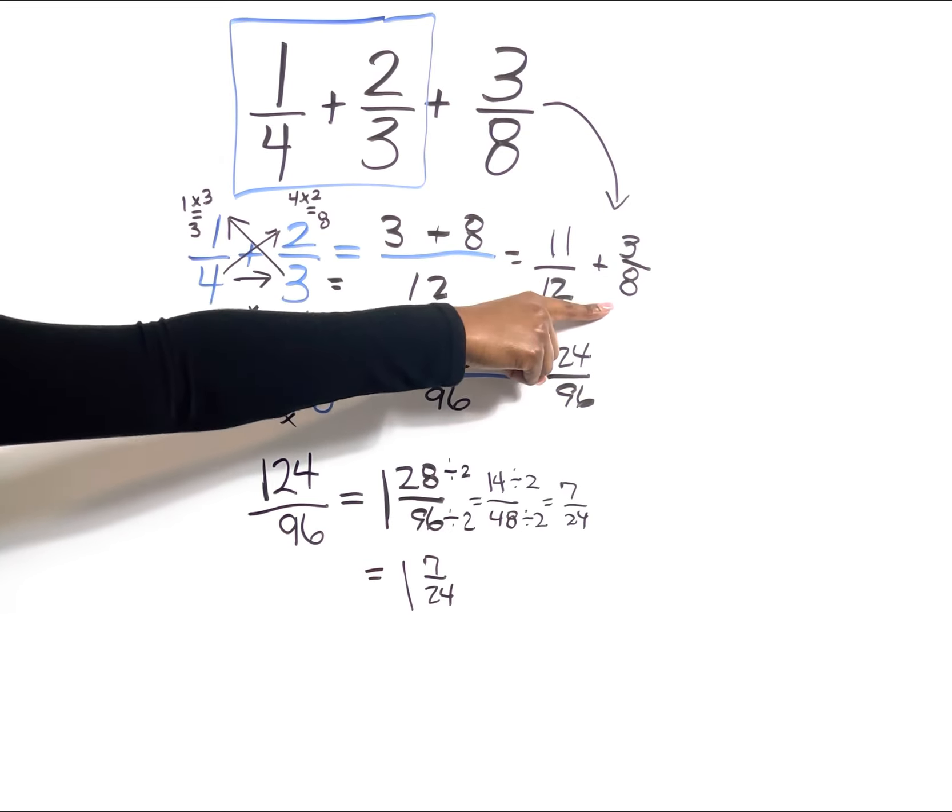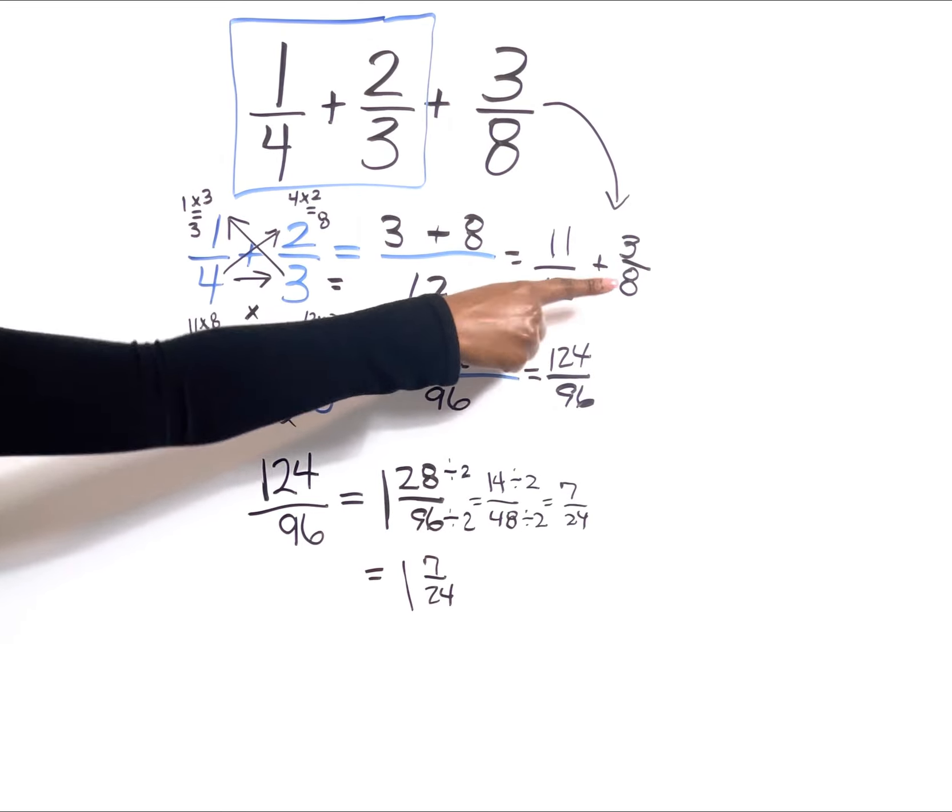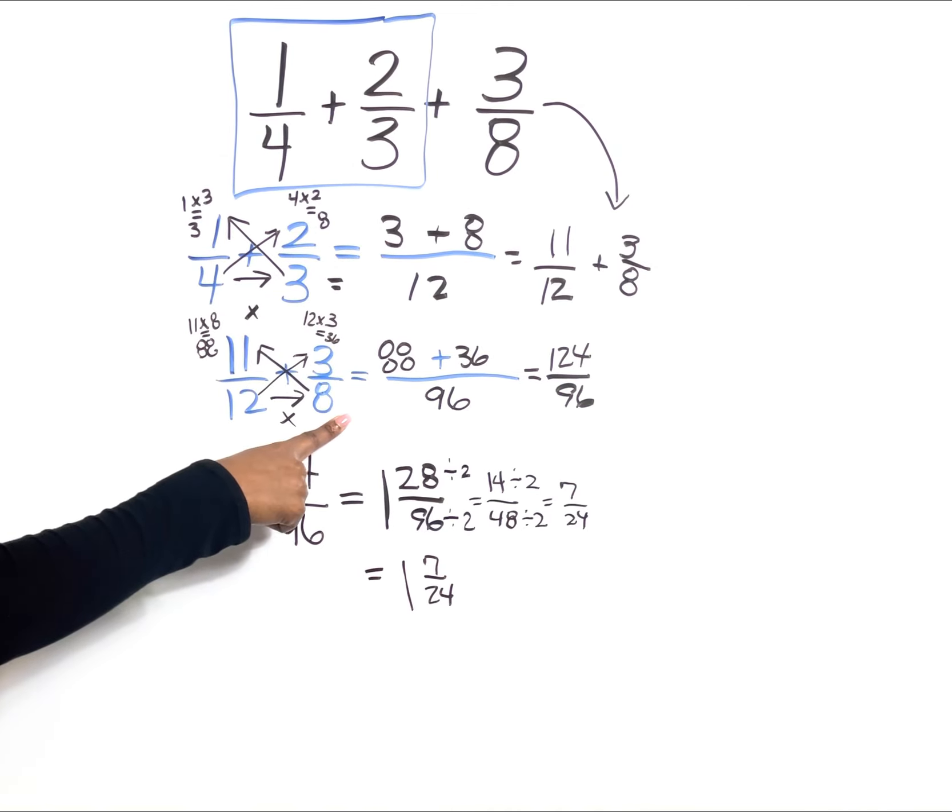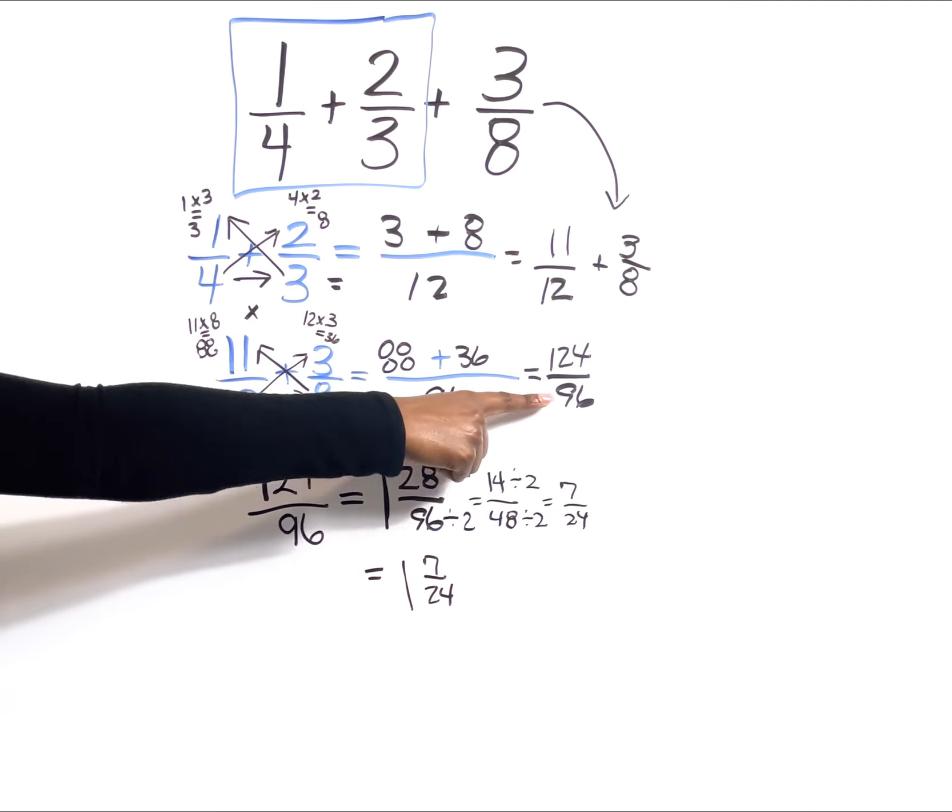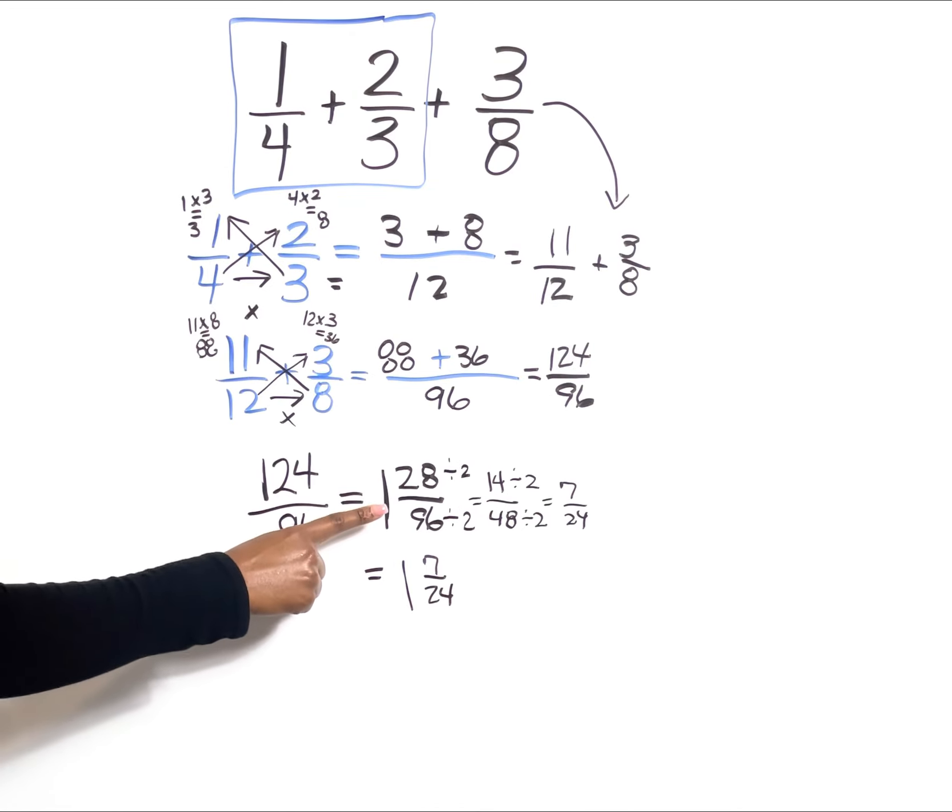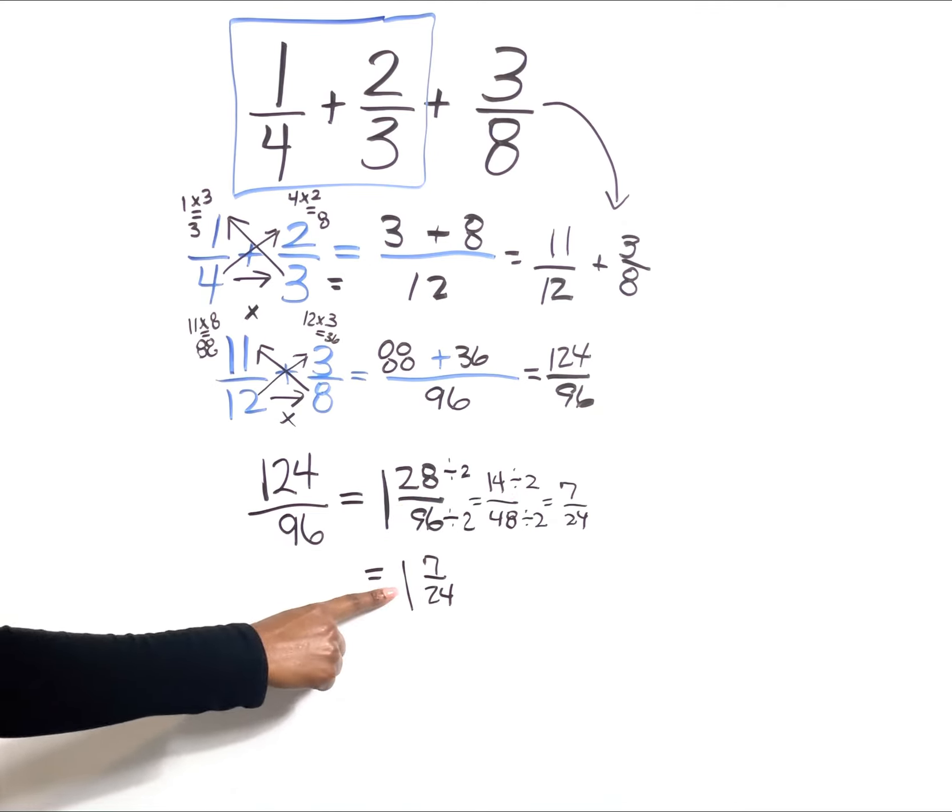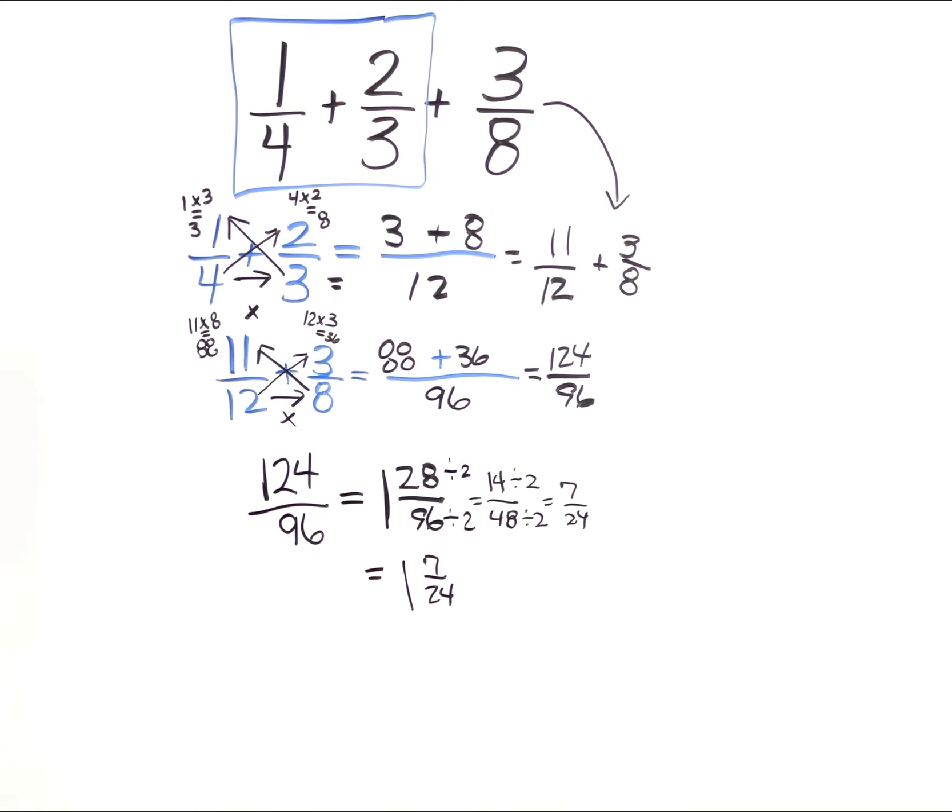Once I got my final answer, I dropped down my additional fraction and started over. We said 11/12 + 3/8 using the butterfly method, we ended with 124/96, which is improper because the number at the top is bigger than the number at the bottom. So we had to change that to a mixed number and always remember to reduce your answer down to its lowest terms. We ended with 1 and 7/24.